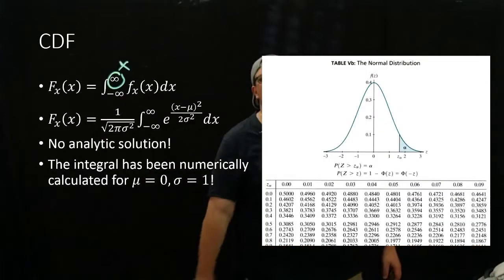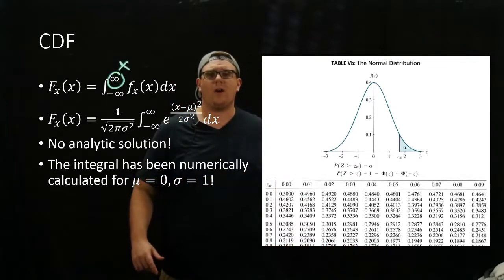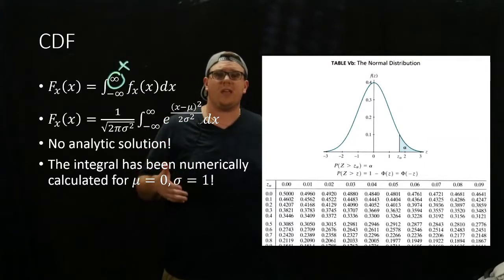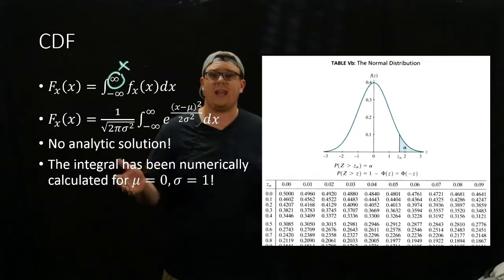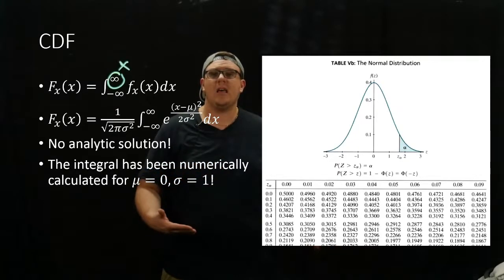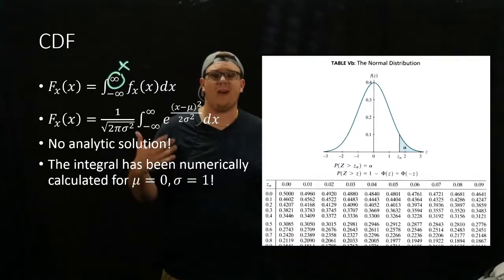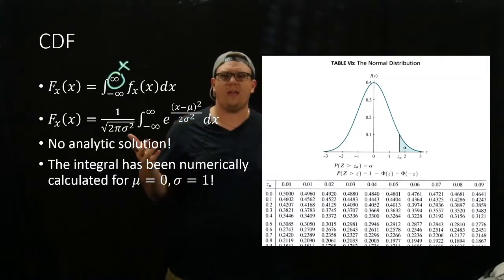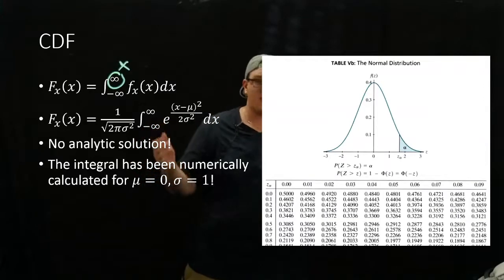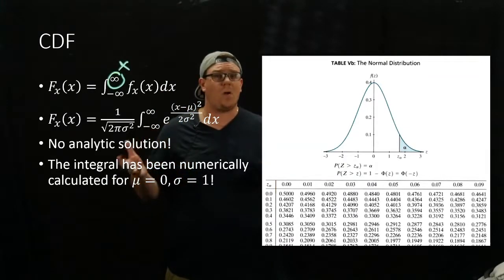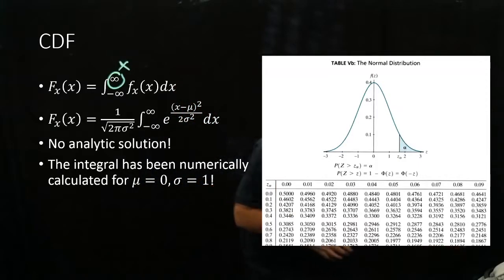This is the table of the normal distribution. You look for the z value — here it's actually one minus the cumulative distribution function. So you look for a value of z, and it tells you the probability of getting z greater than a certain value. For example, you look at 0.6 on the side and go over to 0.01 — that's the probability of having z greater than 0.61, which is 0.2709. So the cumulative distribution is just one minus that.